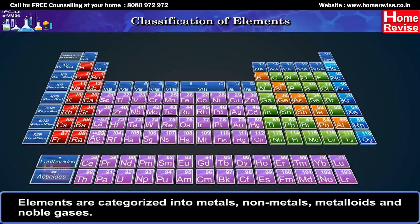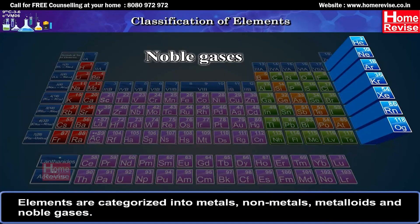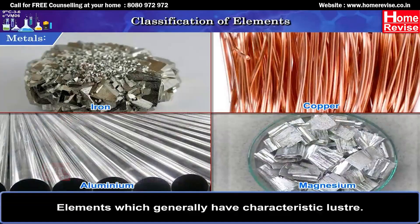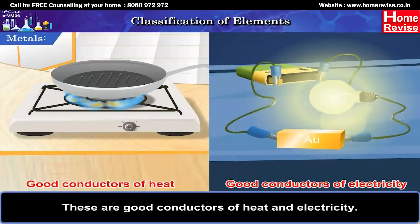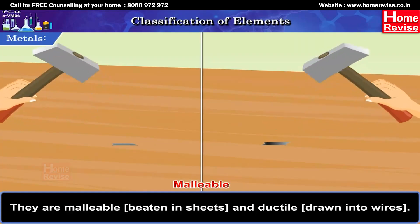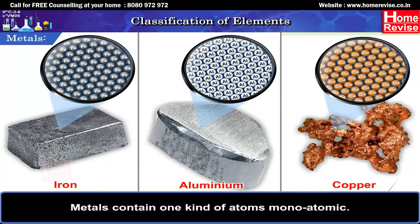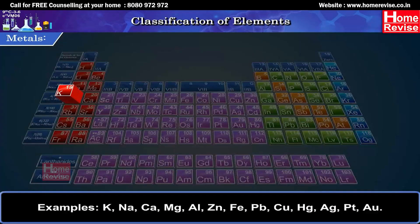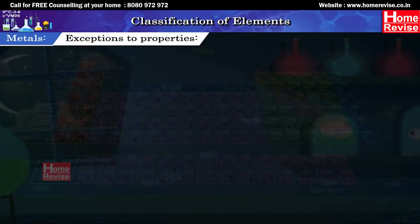Metals: Elements with characteristic lustre. They are good conductors of heat and electricity. They are malleable (can be beaten into sheets) and ductile (can be drawn into wires). Metals contain one kind of atoms — monoatomic. Examples: K, Na, Ca, Mg, Al, Zn, Fe, Pb, Cu, Hg, Ag, Pt, Au. Exceptions: Mercury (Hg) is liquid at room temperature; Zinc (Zn) is non-malleable and non-ductile; Tungsten (W) is a poor conductor of electricity.